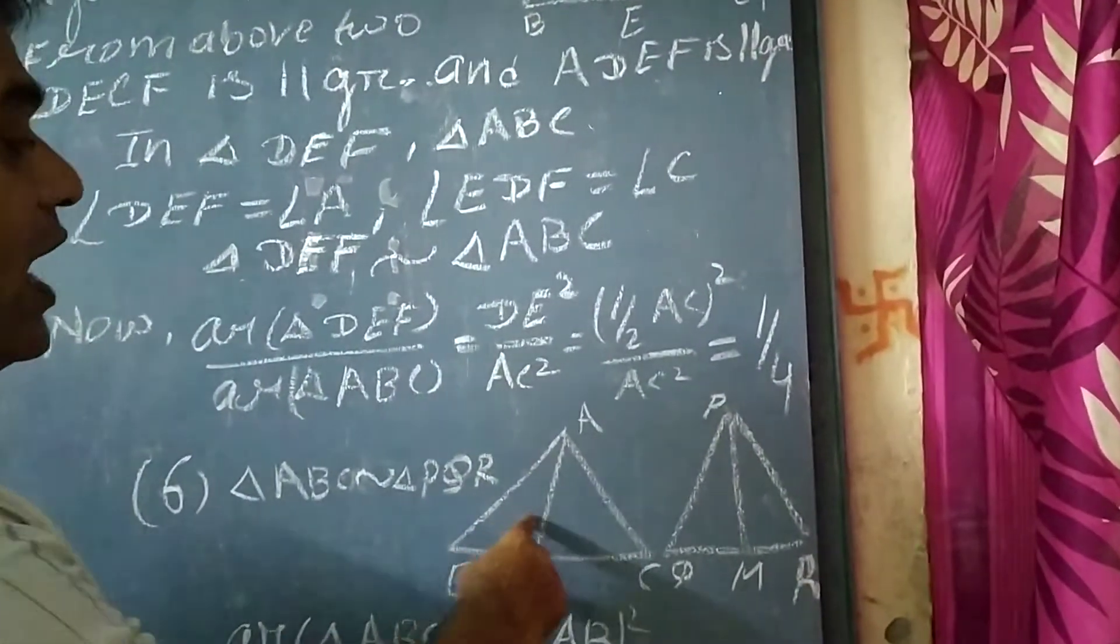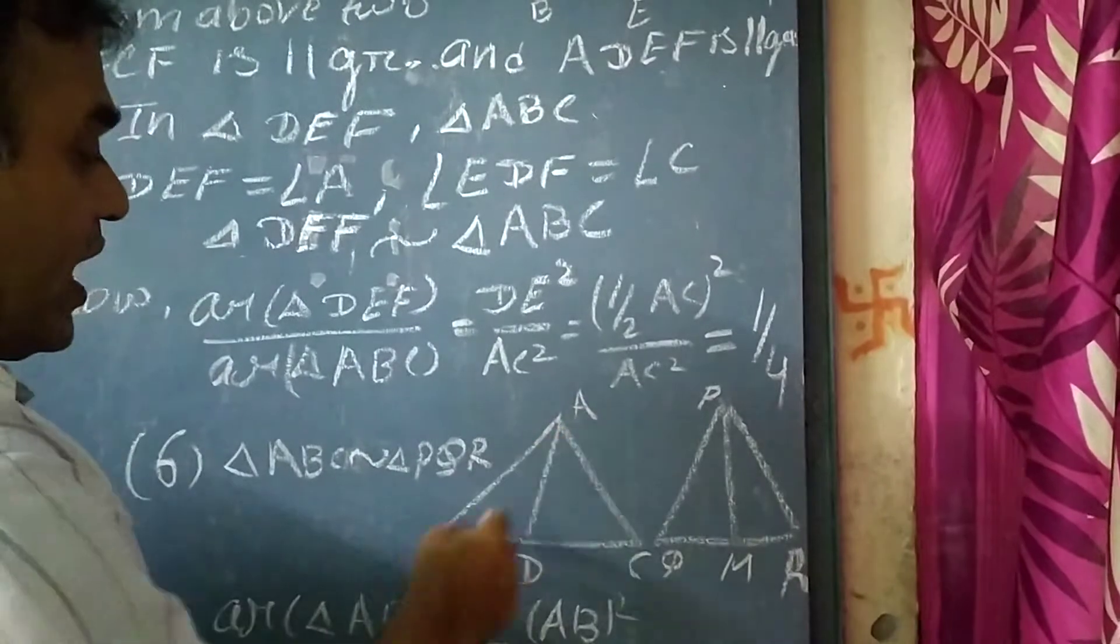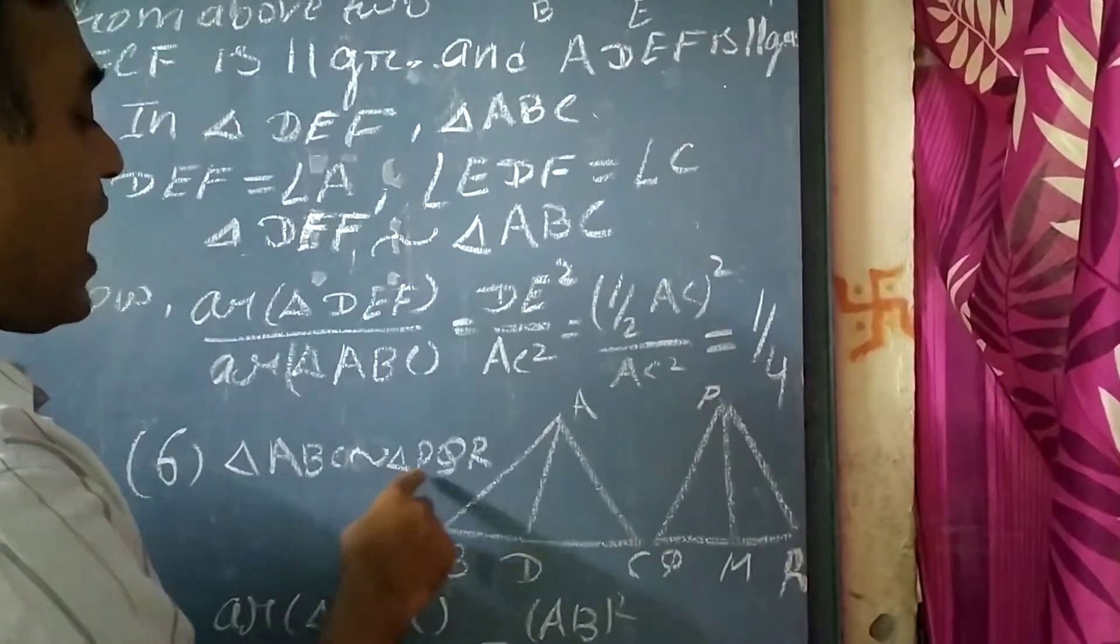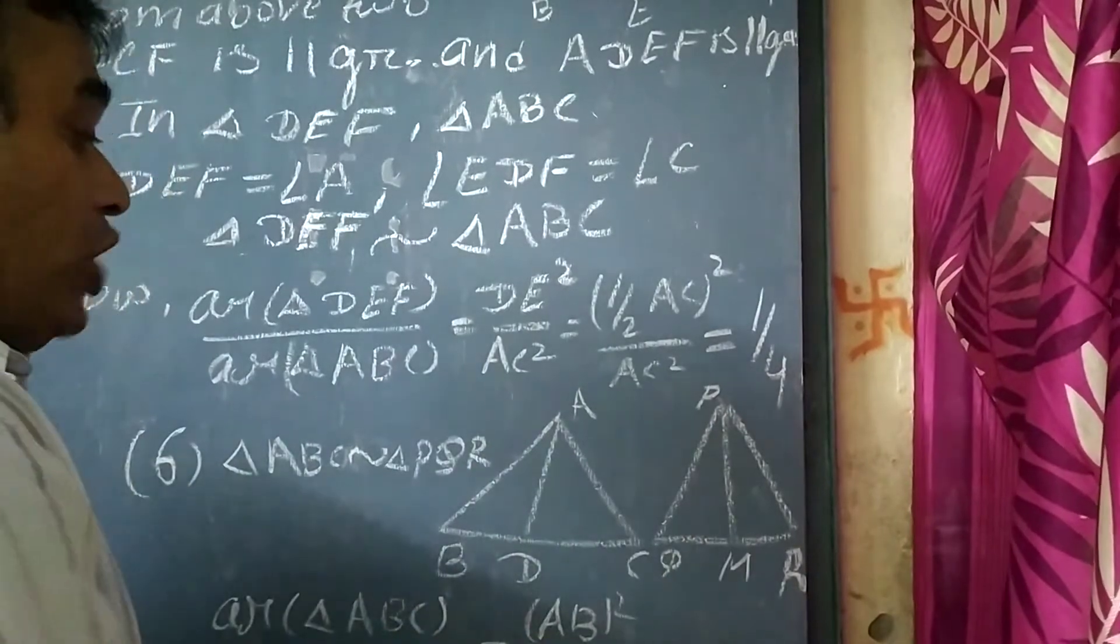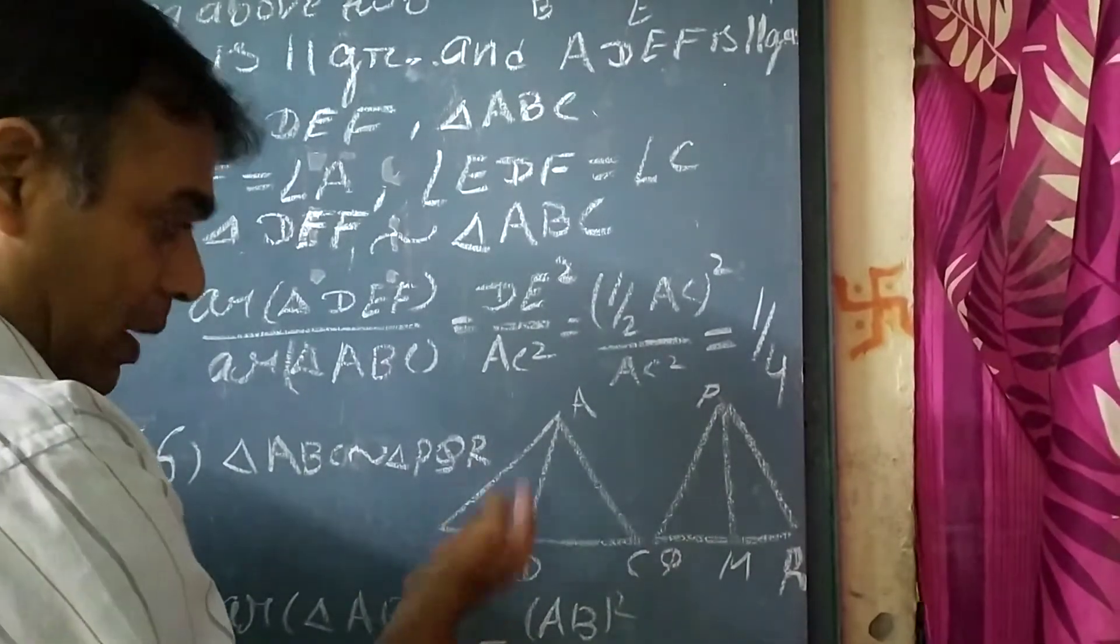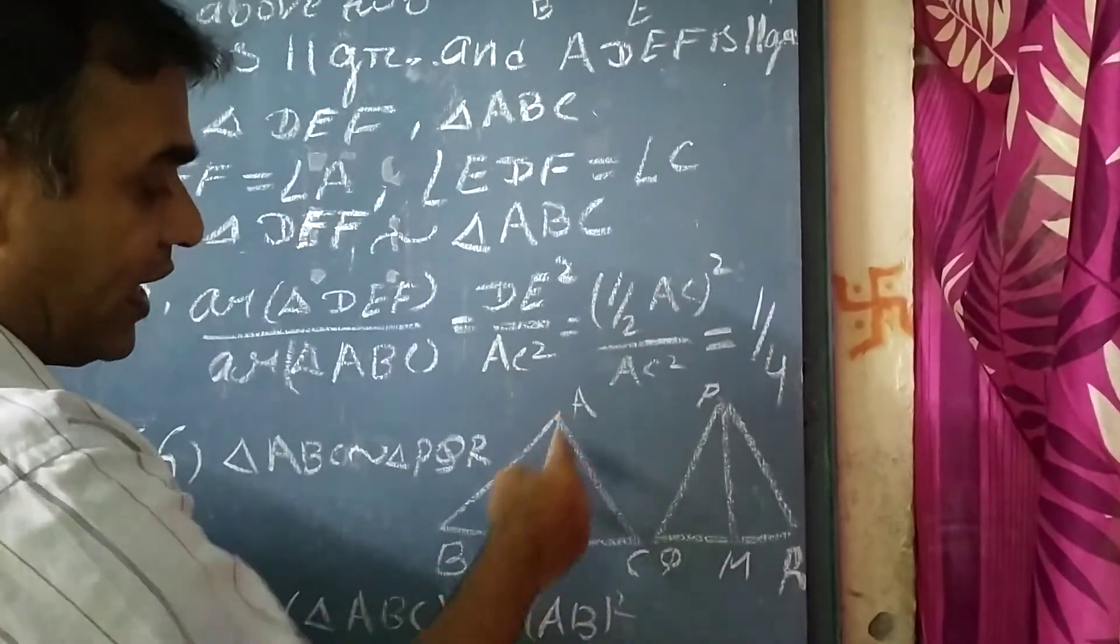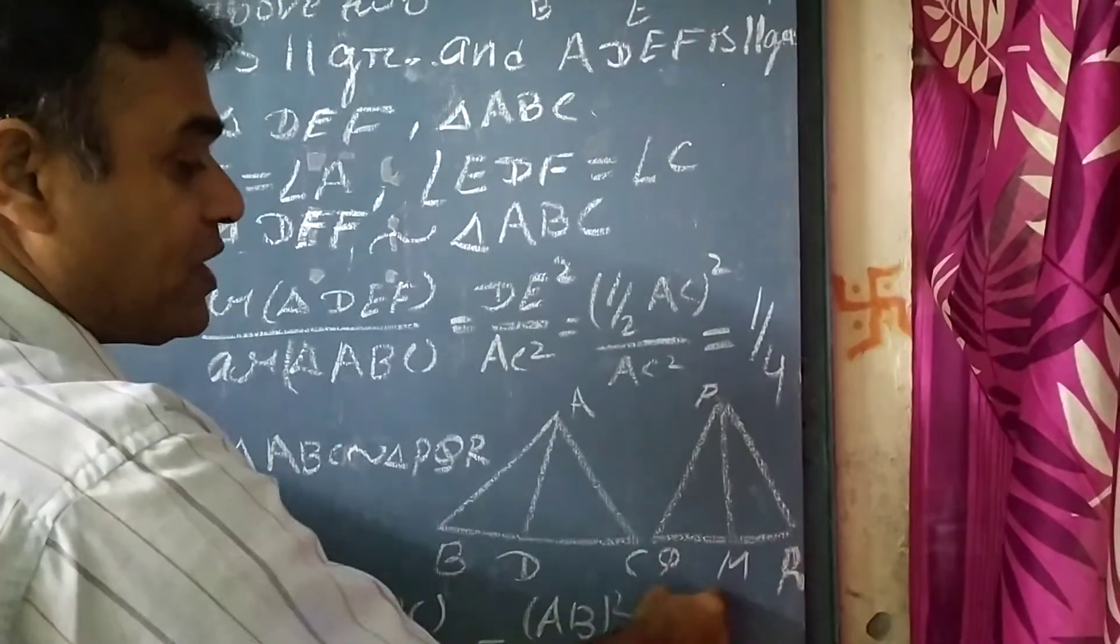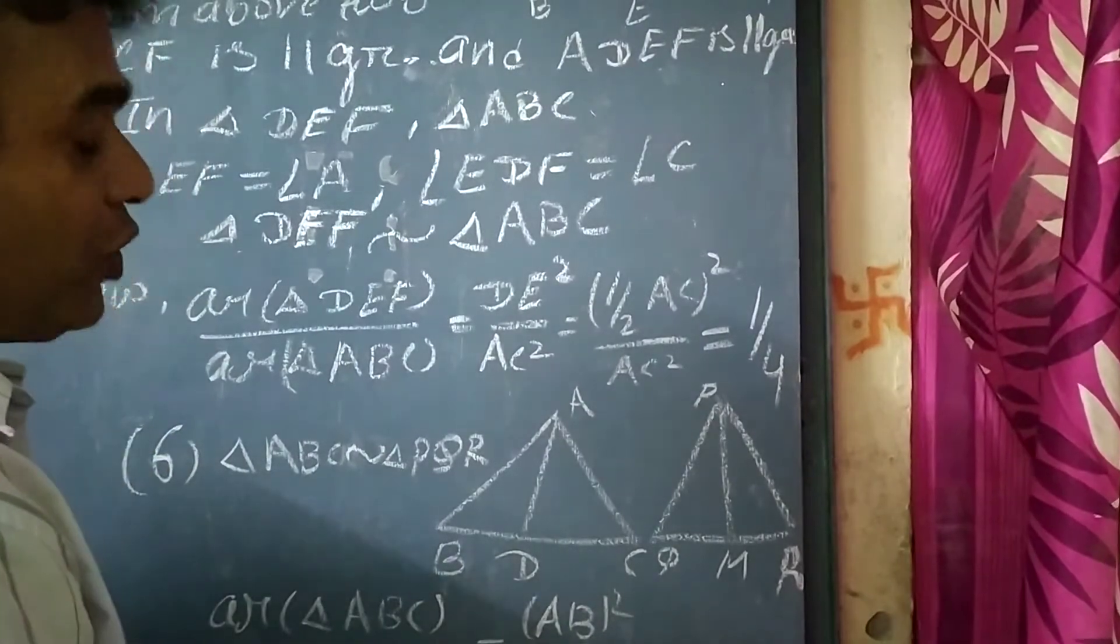Now question number 6. Two triangles are given here, ABC and PQR, so both triangles ABC and PQR are similar. As they are similar, we have proven in initial problems that AD is median of triangle ABC and PN is median of triangle PQR.